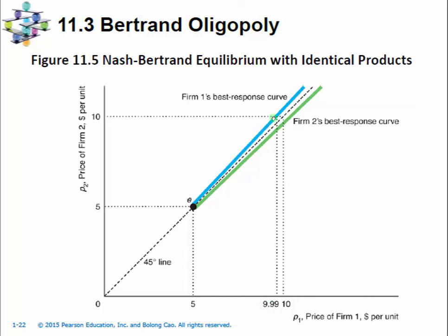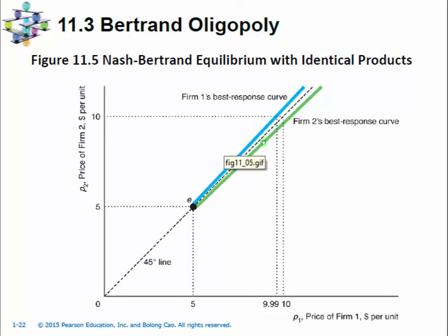Once firm 1 sets its price slightly less than firm 2's price, it will capture the whole market quantity demanded. And given this $9.99, firm 2 will further cut its own price to $9.98. And then firm 1 will cut its price to $9.97, and so on and so forth. The price will unravel to the equilibrium point of $5 very fast.